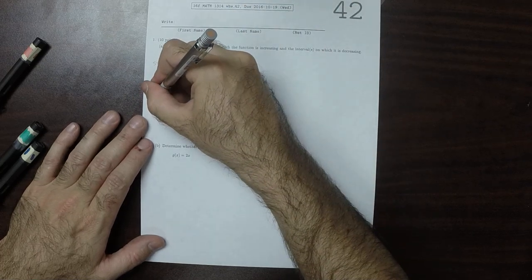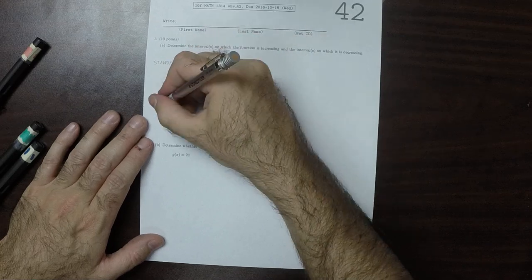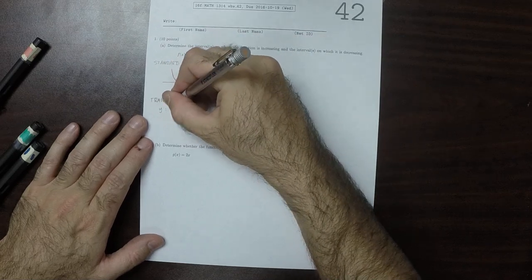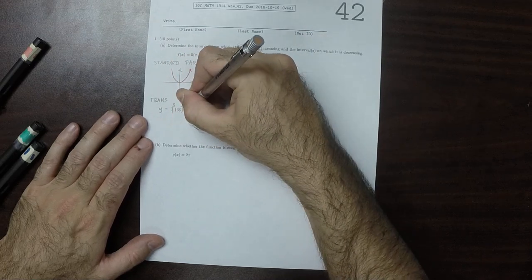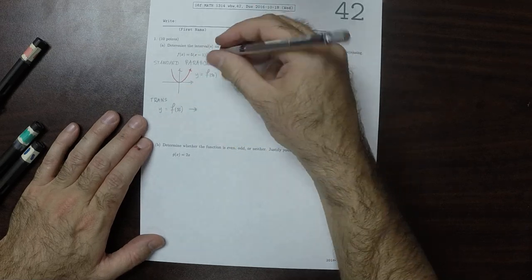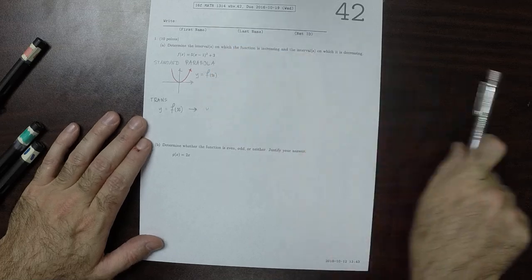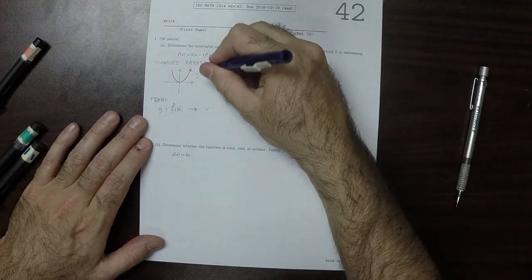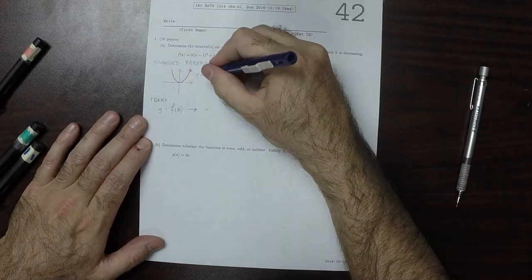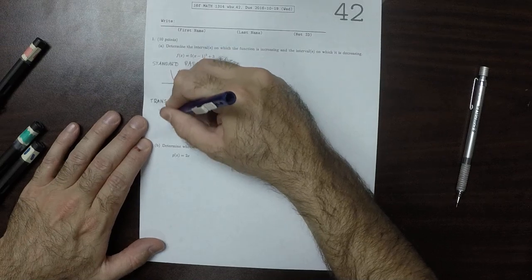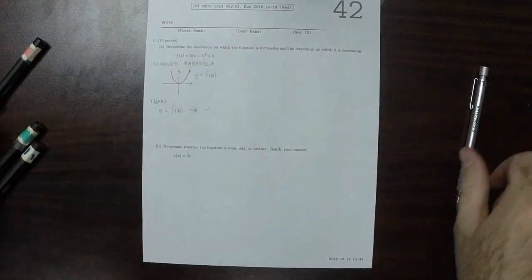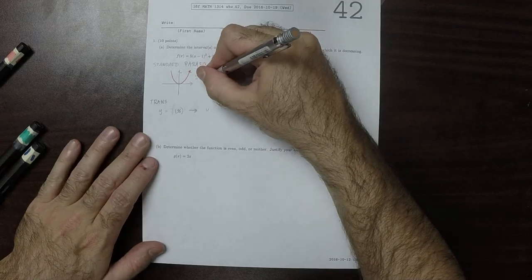So let's do the transformation. Y is f of x transforms to... Sorry, I don't want to call this f because that's confusing, because that's an f. So let's call this, say, p for parabola.